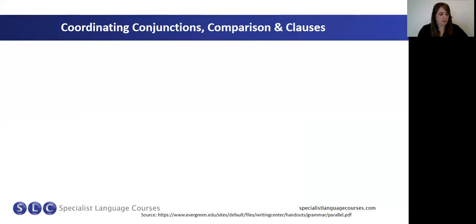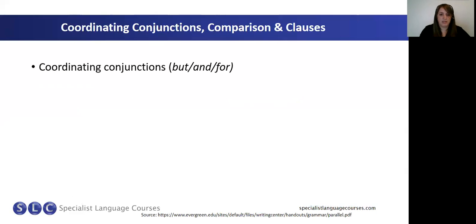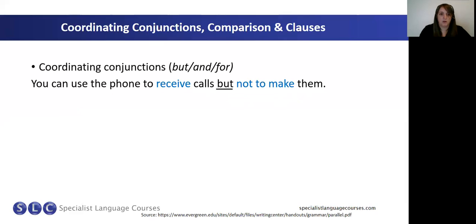We can also use parallel structures in coordinating conjunctions, comparisons and clauses. With a coordinating conjunction — for example, and, but or for — we use a parallel structure. For example: you can use the phone to receive calls, but not to make them. The structure we need to repeat is a verb with 'to'. Notice we can use this structure in positive or negative, but we still need to follow the same pattern.